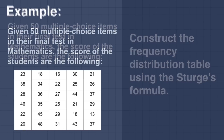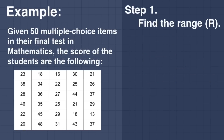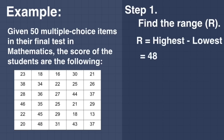For step number 1, find the range or R. The formula for range is equal to the highest score minus the lowest score. The highest score is 48 and the lowest score is 13. We subtract, and the answer is 35.